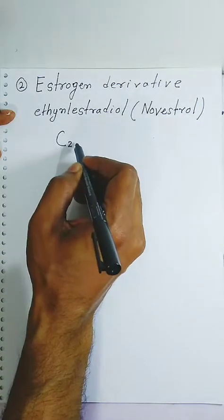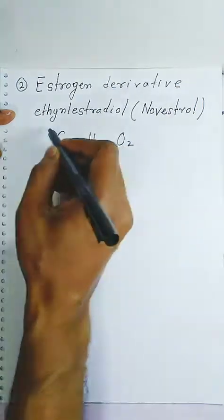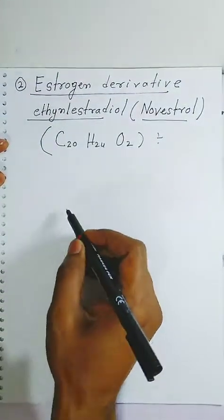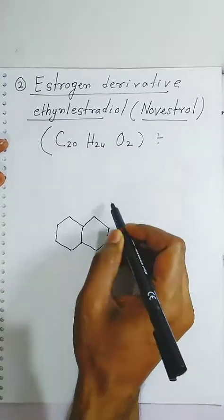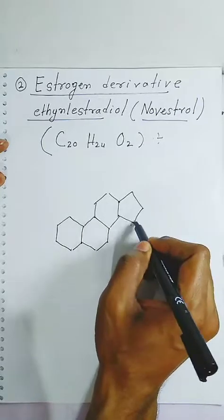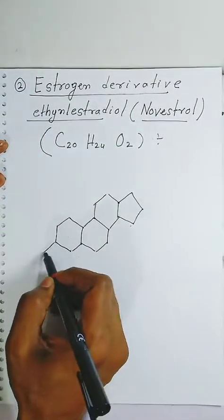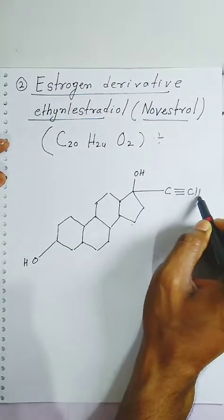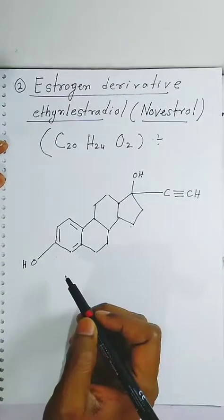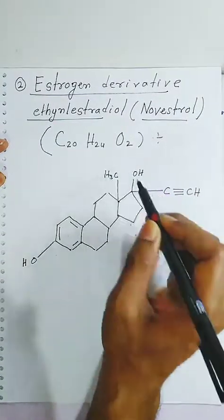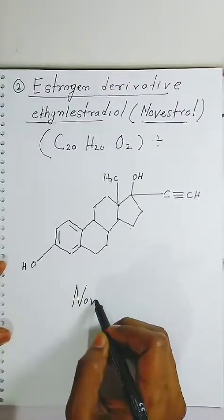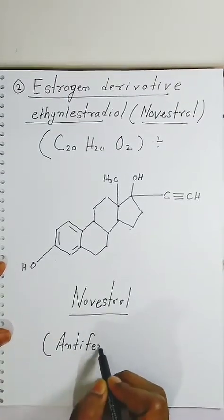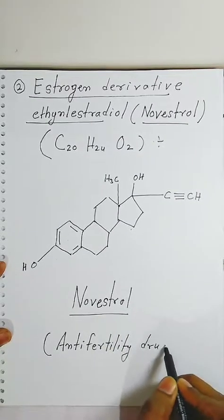You have to make 3 hexagonal structures and 1 pentagonal structure as the nucleus. Because the name ends in '-ol', you have to add an OH group on one side, and there is also an OH group attached on another side. There is an ethyne group with a carbon-carbon triple bond. Total number of double bonds will be only 3. Because carbon 21, a methyl group will be here. This is the structure of Noestrol — a very important anti-fertility drug which works against fertility.